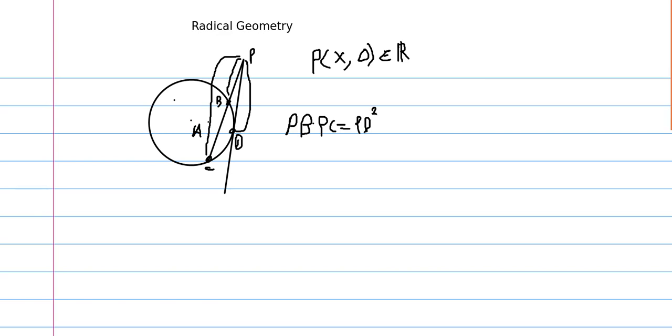This is really just some similar triangle geometry. If you draw in the radii here and do some stuff. So this power is always equal. If I draw in another secant and compute this length times this length, I'm going to get the same number. It doesn't matter where I do it, obviously, because this is a function, so we're only going to get one output.